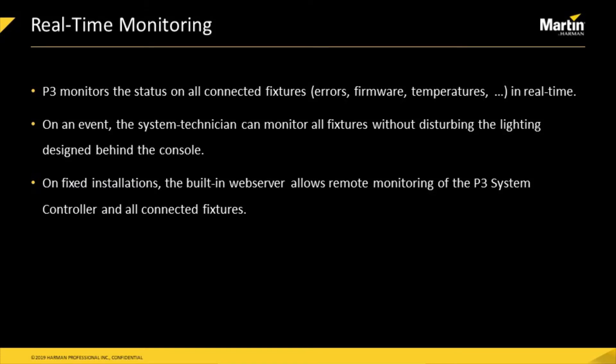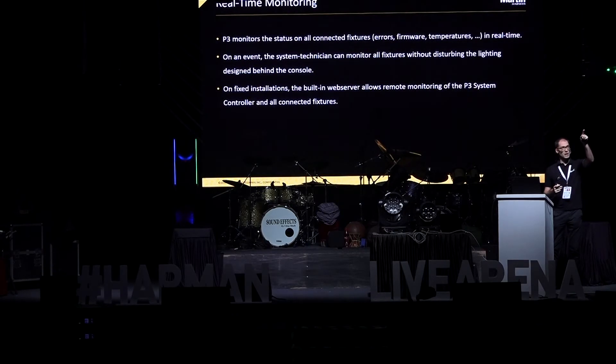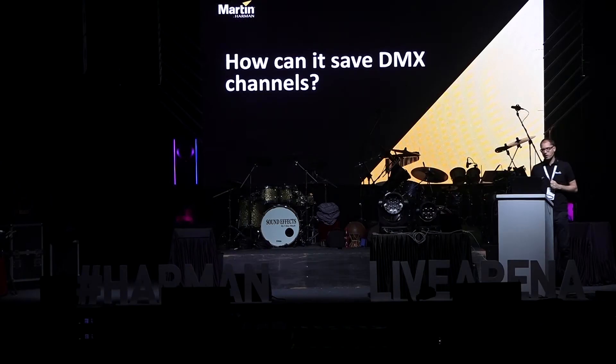Also very important is remote monitoring. The P3 gets real-time feedback from all the fixtures, so you can see error codes, firmware updates, and temperatures all in real time. This is especially important for architectural installations — you can remotely log into the P3 via a website and see how all the fixtures on a building are doing, without needing to go to the building to check for problems or firmware updates.